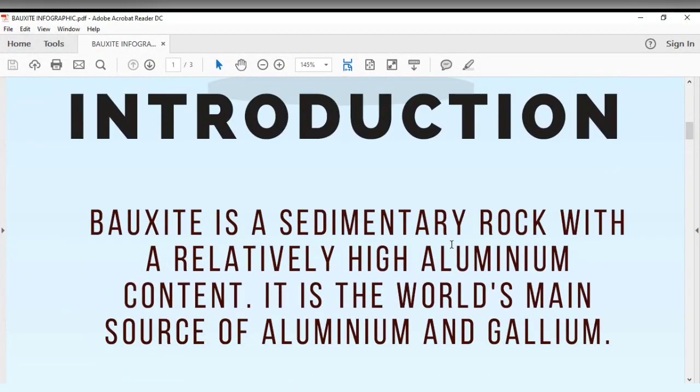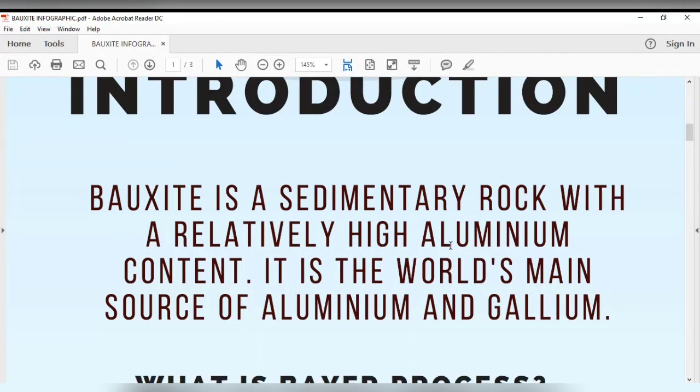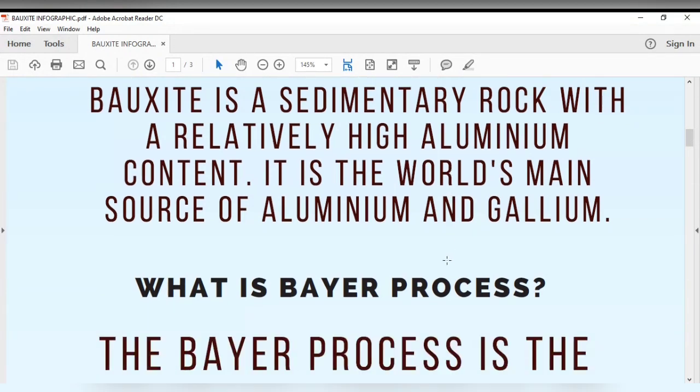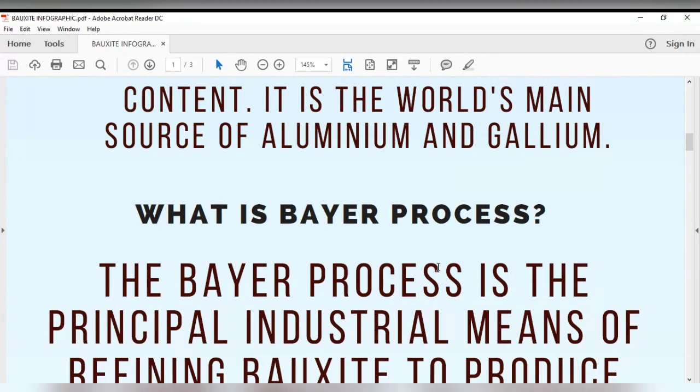Bauxite is a sedimentary rock which has high concentration of aluminum. It is the world's main source of aluminum and gallium. Because of this high content in aluminum, we need the Bayer process.